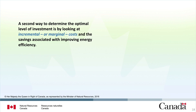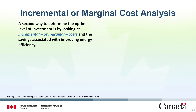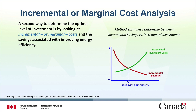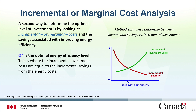A second way to determine the optimal level of investment is by looking at incremental or marginal costs and the savings associated with improving energy efficiency. The diagram shows Q as the optimal energy efficiency level — this is where the incremental investment costs are equal to the incremental savings from the energy costs. At this level, total lifecycle cost is at its lowest. Every dollar spent up to point Q has led to cost savings greater than a dollar, while investing an extra dollar beyond Q will lead to cost savings less than the dollar invested.